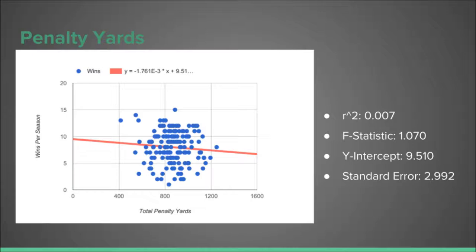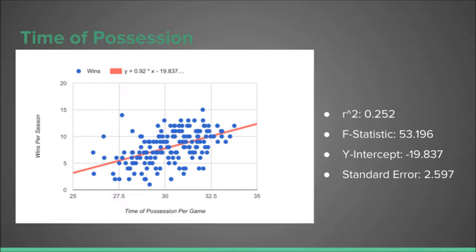In contrast to the turnover differential, penalty yards was the least helpful in predicting wins and had the largest standard error. It can be seen from the scatterplot that there is a very weak negative correlation between the independent and dependent variables.